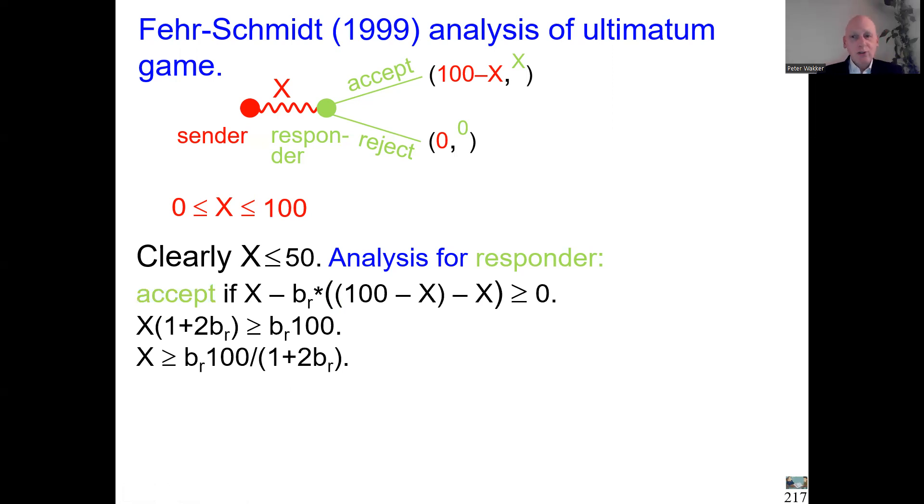Let us do a bit of algebra. X happens one plus two b_r times. And I move this to the other side. So if and only if this inequality holds, X should exceed that fraction. That is if and only if acceptance is good. Let us try a few values. Consider the case X equals 50. Well, X equals 50, then it's fair. You both get 50. That's always accepted because then this is always below 50 for every positive b_r.